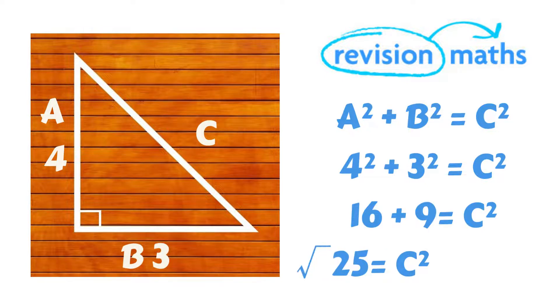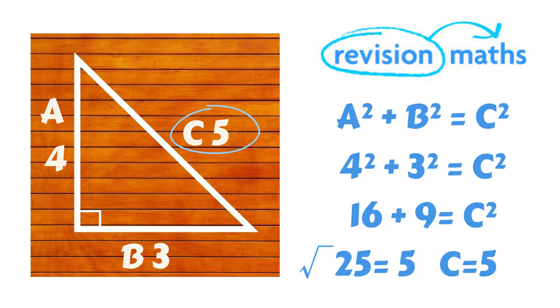So now we just need to square root the 25 which equals 5. So this means that 5 equals C.